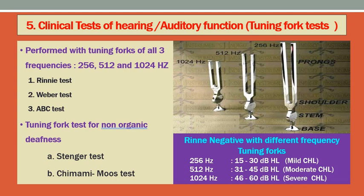Now we come to the clinical test of hearing. Both ears need to be examined. Tuning fork tests are performed with tuning forks of three frequencies: 256, 512, and 1024 Hz. The Rinne test, Weber test, and ABC test are commonly performed, and sometimes the Schwabach test, which is a modification of the ABC test. Tuning fork tests for non-organic hearing loss — like the Stenger test and Chimani-Moos test — may be asked in exams. Rinne, Weber, ABC, or Schwabach tests are the most common.